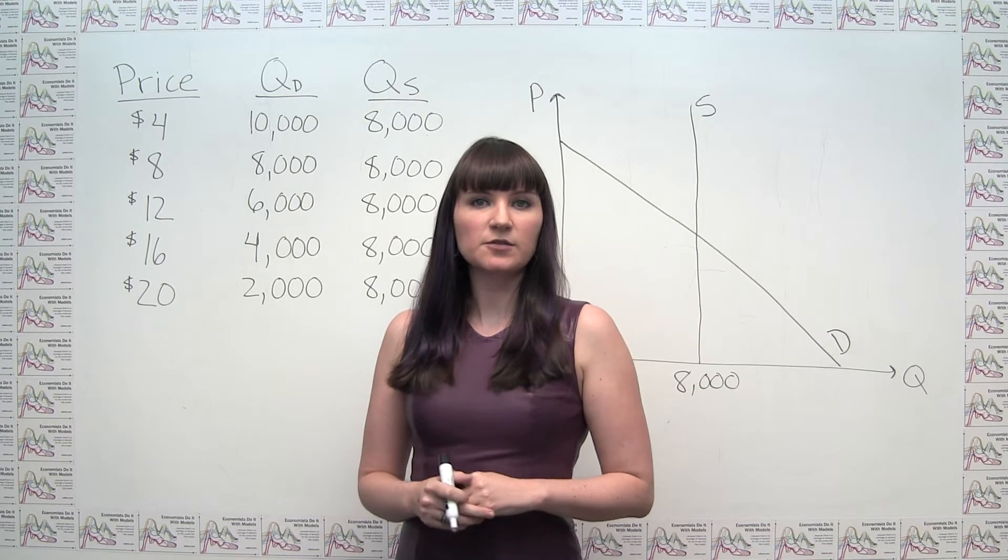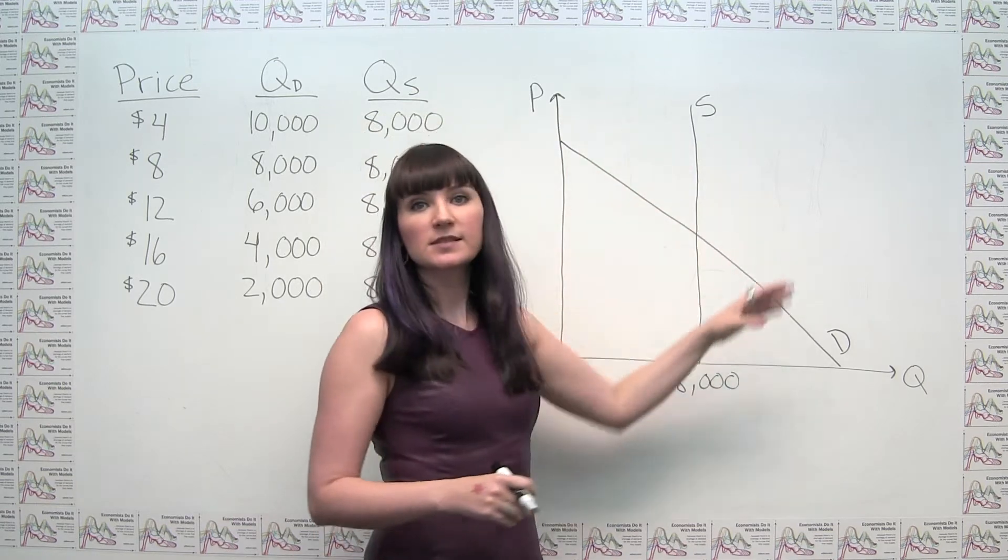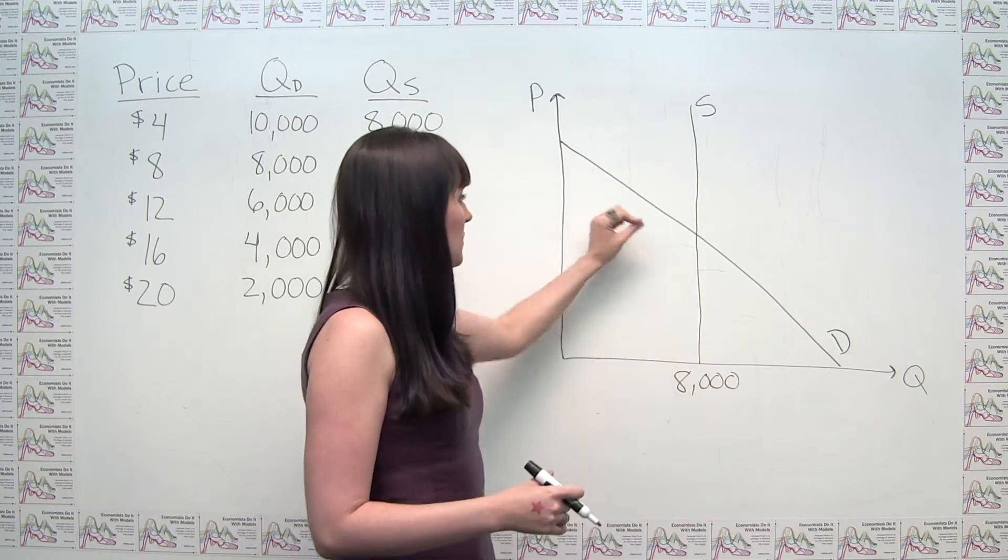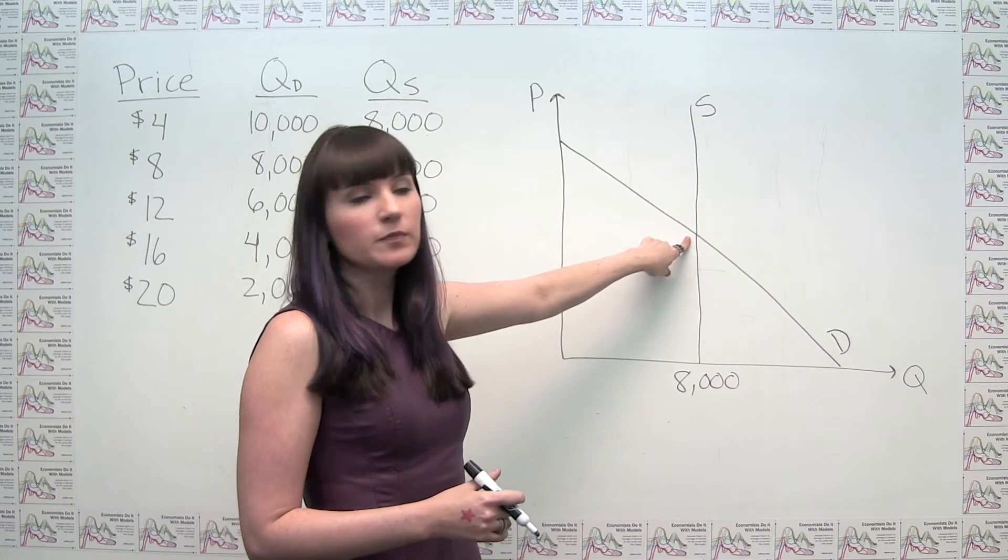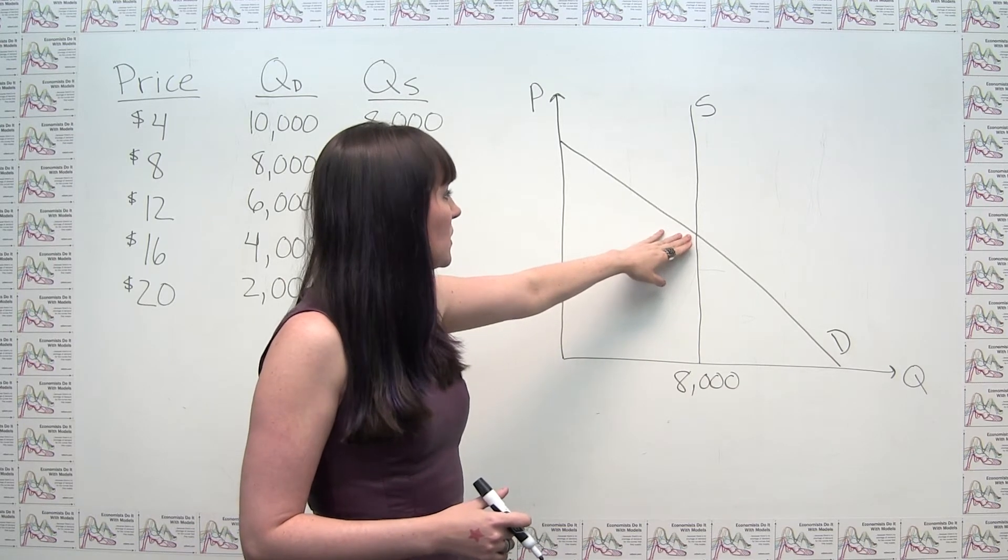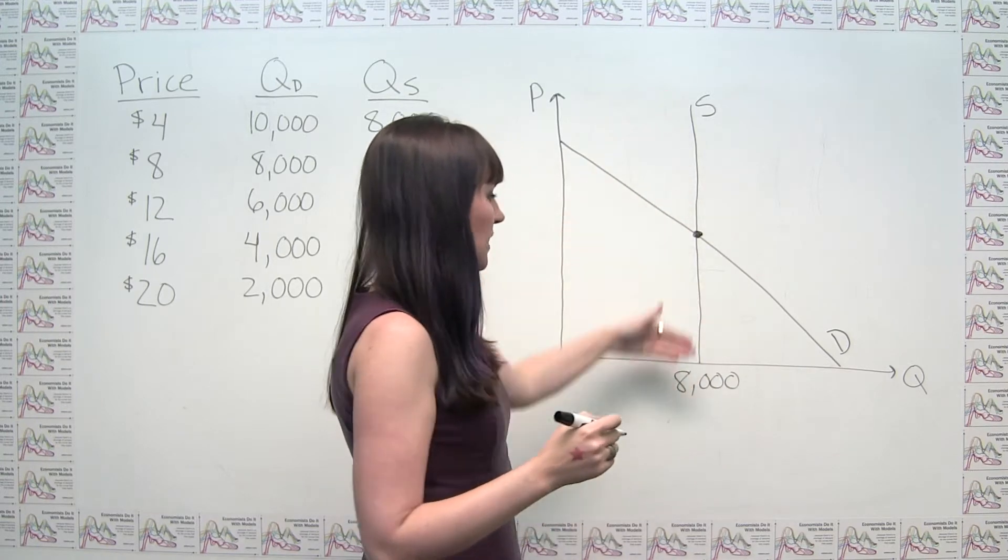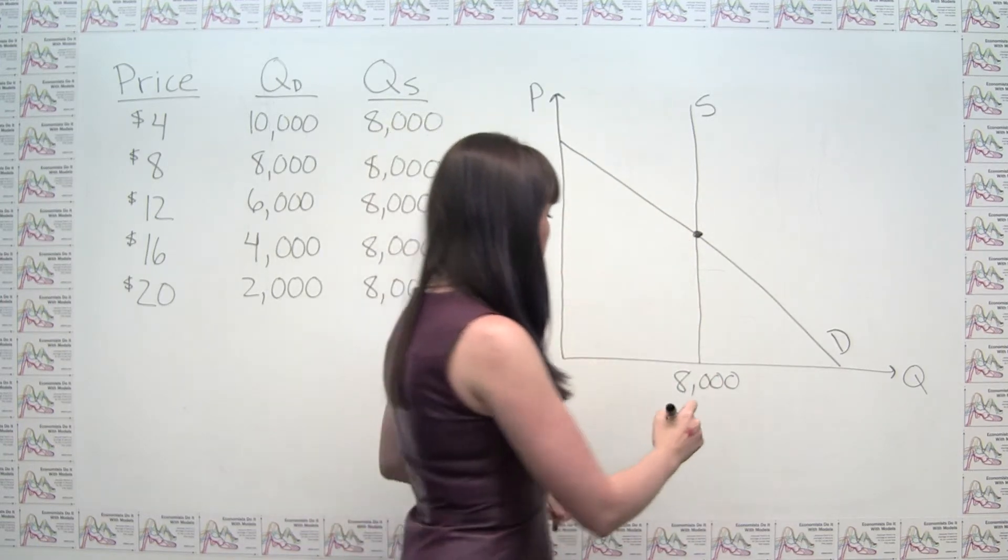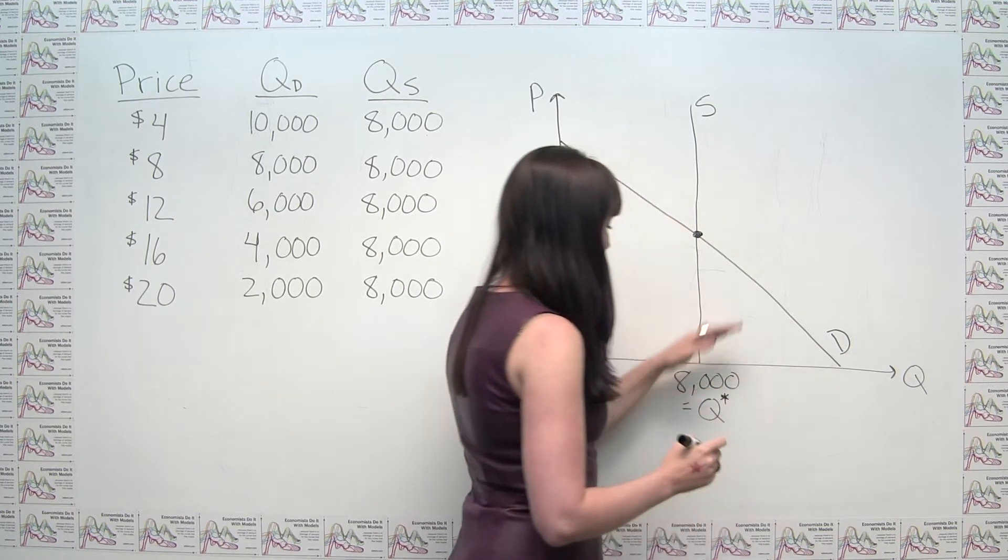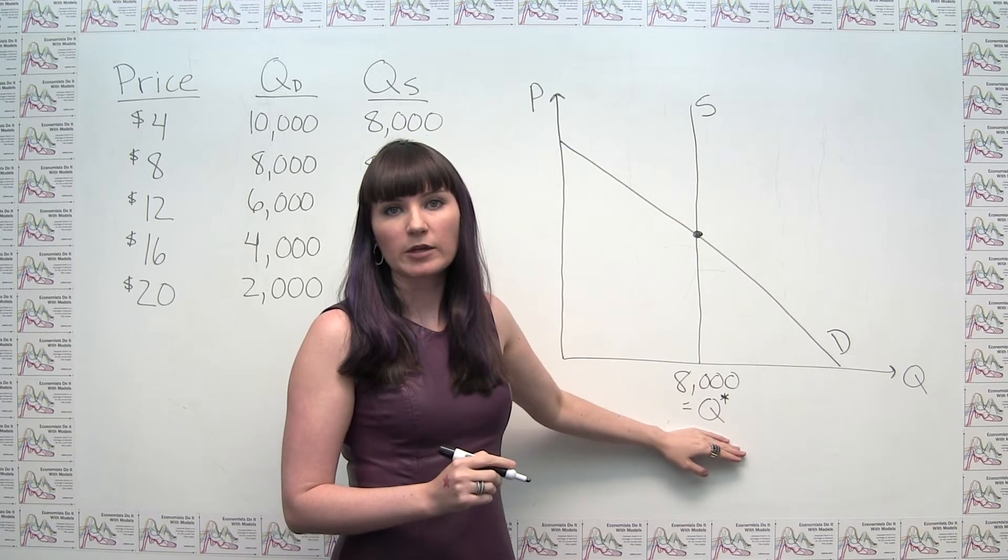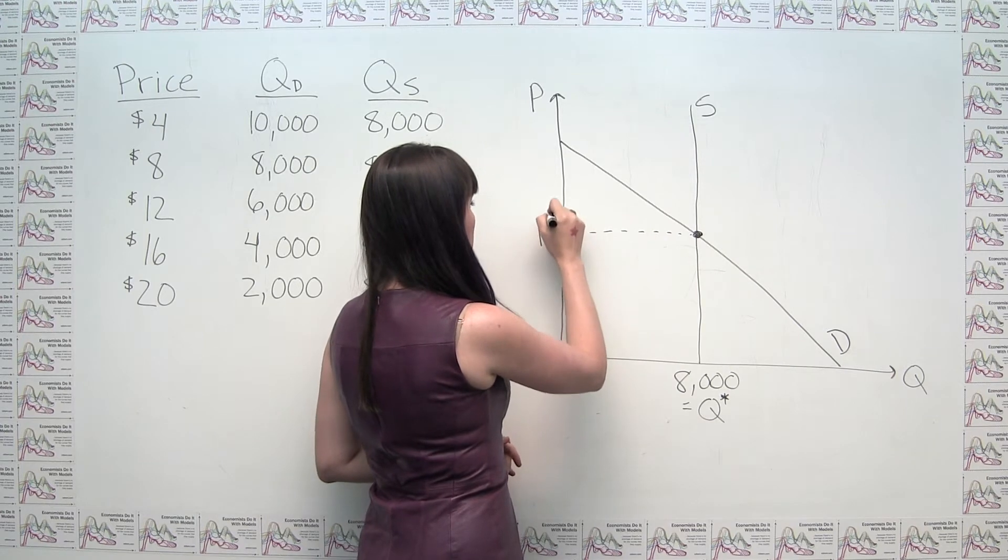Part B of the question asks us to find the equilibrium price and quantity of tickets. So if we had drawn this graph to scale, we could find our equilibrium price and quantity at the intersection of the supply curve and the demand curve. We didn't draw this totally to scale, but we can see, because the supply curve, the quantity is basically fixed at 8,000, we can see that this point of intersection is going to be at 8,000. So we can say that 8,000 is the equilibrium quantity in our market.